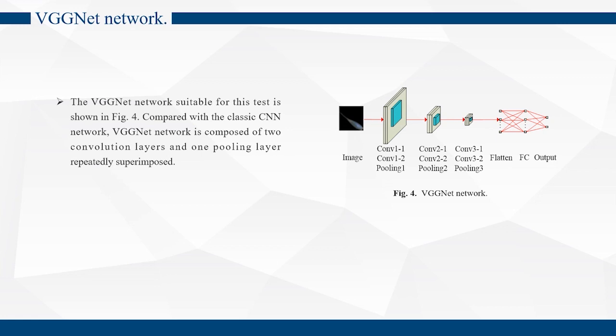Compared with the classic CNN network, VGG network is composed of two convolution layers and one pooling layer repeatedly stacked.